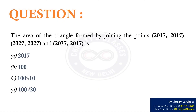In this video, let us discuss a question on area of a triangle. The area of the triangle formed by joining the points 2017, 2017; 2027, 2027; and 2037, 2017 is...